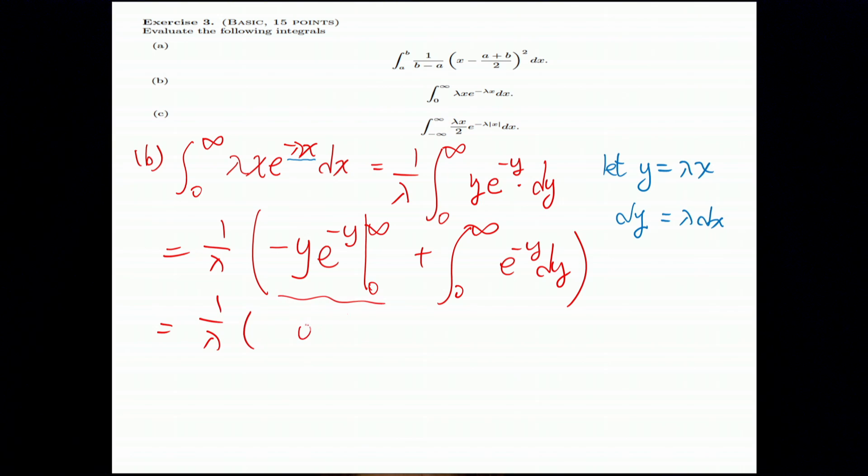And this is 0 plus this is 1. So, finally, it is 1 over lambda. Why this is 1? Because it's an exponential distribution. Exponential distribution. Then the PDF, if I integrate from 0 to infinity, we collect all these possibilities. So, then it's 1. That's part B.